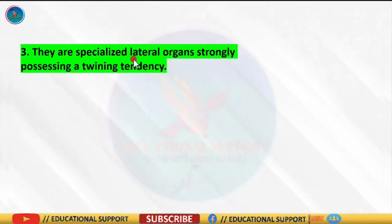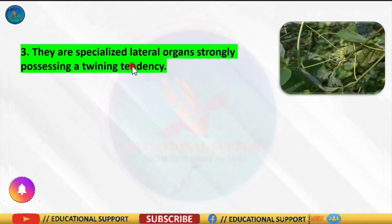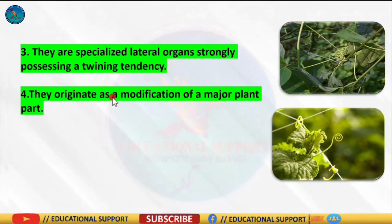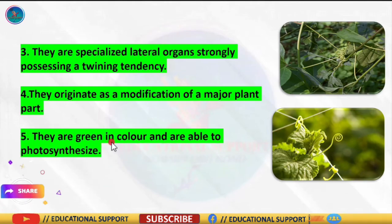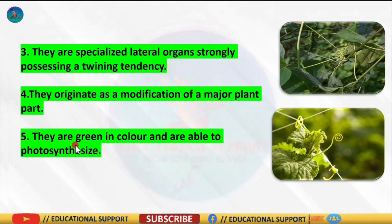They are specialized lateral organs strongly possessing a twining tendency, and they originate as a modification of a major plant part. Furthermore, they are green in color and are able to photosynthesize. So these are the basic similarities between stem tendril and leaf tendril.